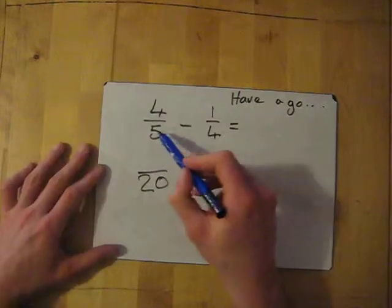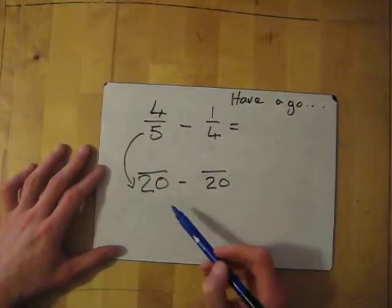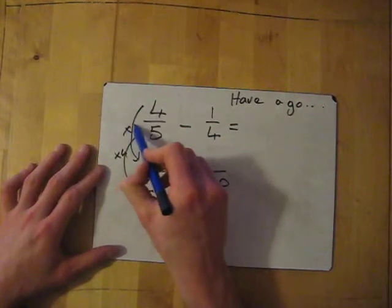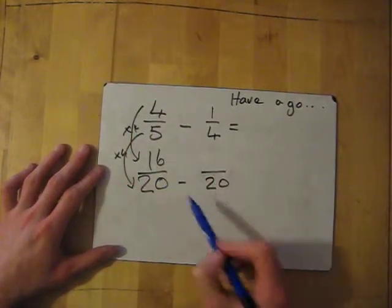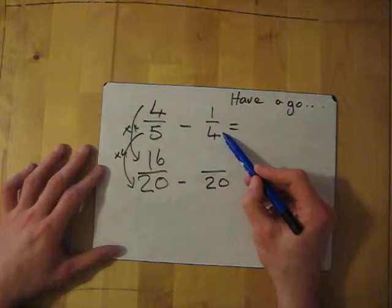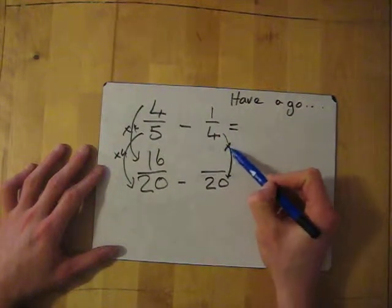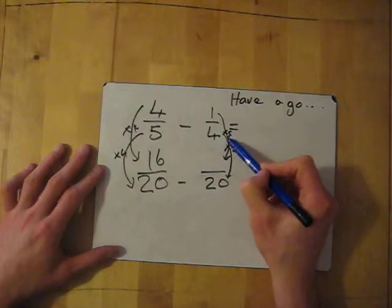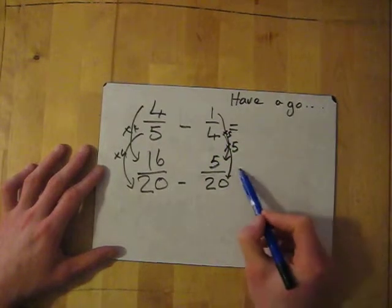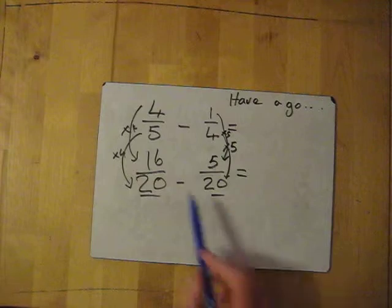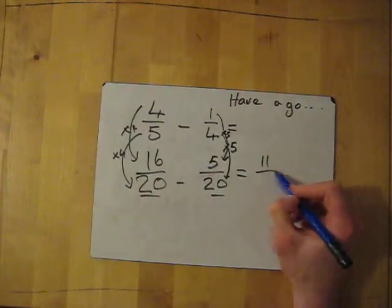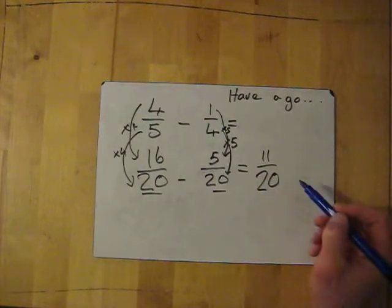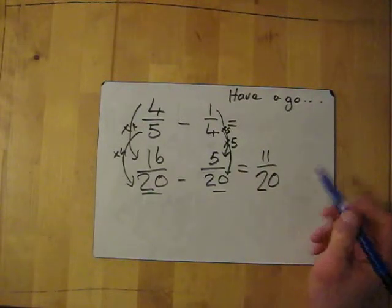To get from five to twenty, I times by four, so I times the top by four as well: four times four gives sixteen. To get from four to twenty, I times by five, so I times the top by five: one times five gives five. Now it's easy — sixteen take away five gives eleven, and the bottom stays the same. So the answer is eleven over twenty.